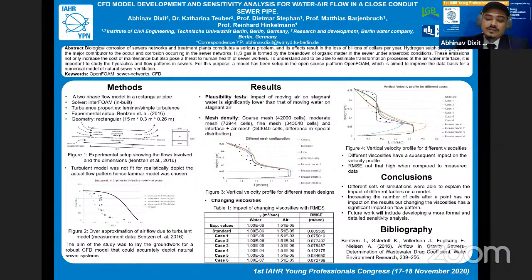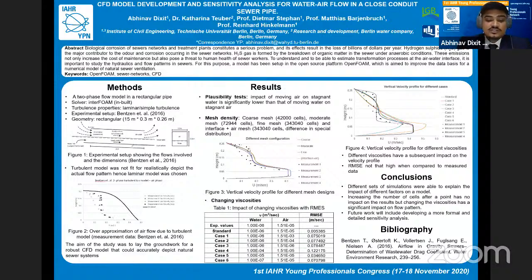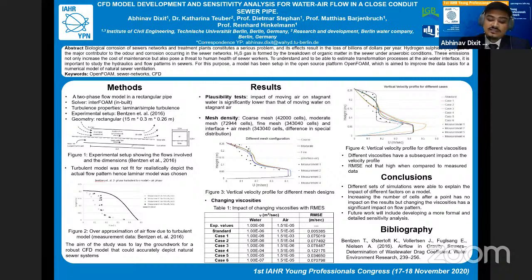Hydrogen sulfide gas is formed by the breakdown of organic matter in the sewer system under anaerobic conditions. These effects have been magnified by changing patterns of water use — there is less water in the system nowadays. Due to climate change, warmer temperatures catalyze this process. While designing urban sewer systems, common practice is to design considering transport of wastewater and runoff water without giving any thought to the air phase. Consequently, the airflow is generally uncontrolled, potentially malodorous, and causes formation of corroding compounds. For this purpose, a two-phase simulation model using CFD is set up in the open-source platform OpenFOAM using the built-in solver interFoam, to analyze the air-water flow in a closed conduit rectangular pipe.